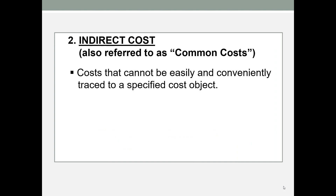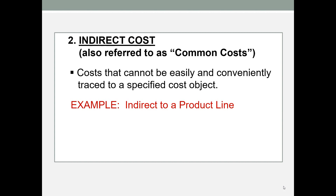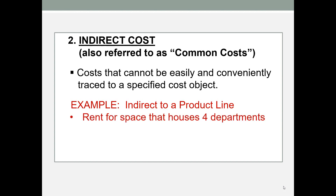An indirect cost, on the other hand — also called a common cost — cannot be easily and conveniently traced to a specific cost object. For example, if we're looking at a product line, rent for space that houses four departments would be indirect. That rent would need to be allocated to the four departments, perhaps based on square feet or divided four ways, but it cannot be traced directly to a given product line.